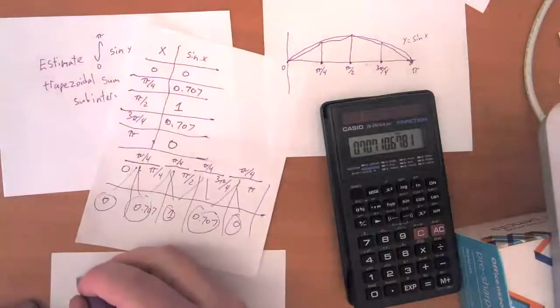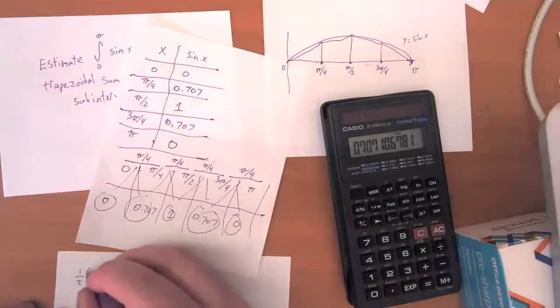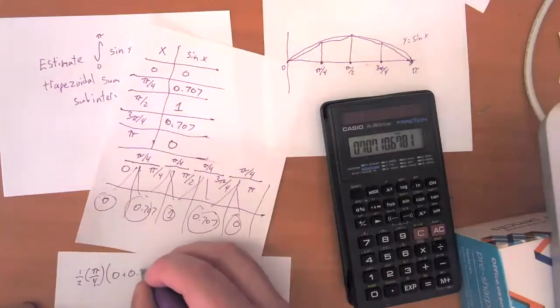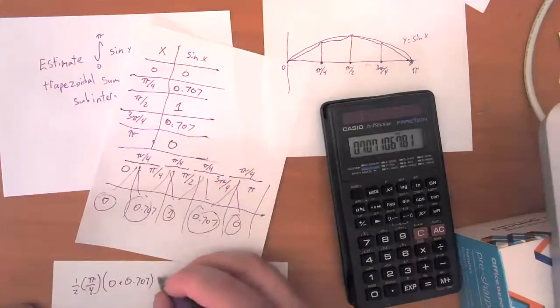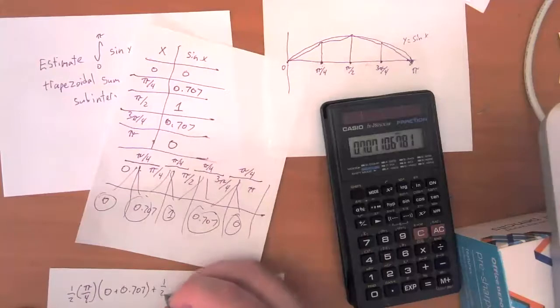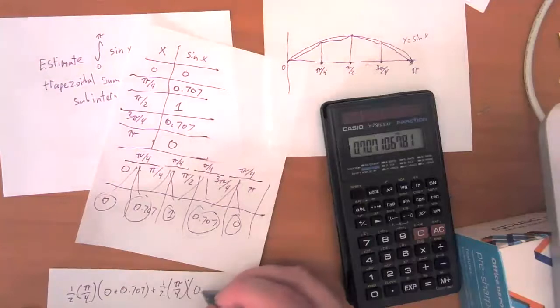Is one half times pi over four times zero plus 0.707, plus one half times pi over four times 0.707 plus one.